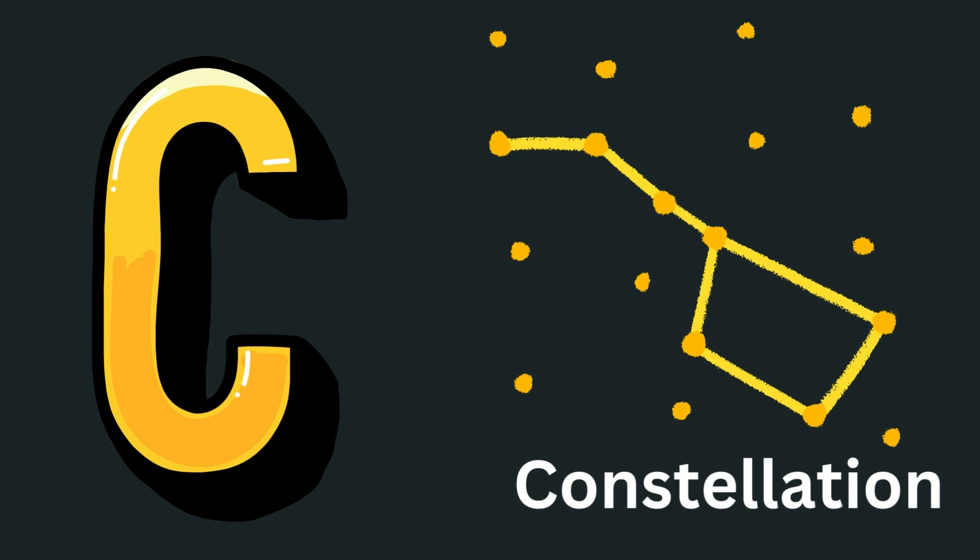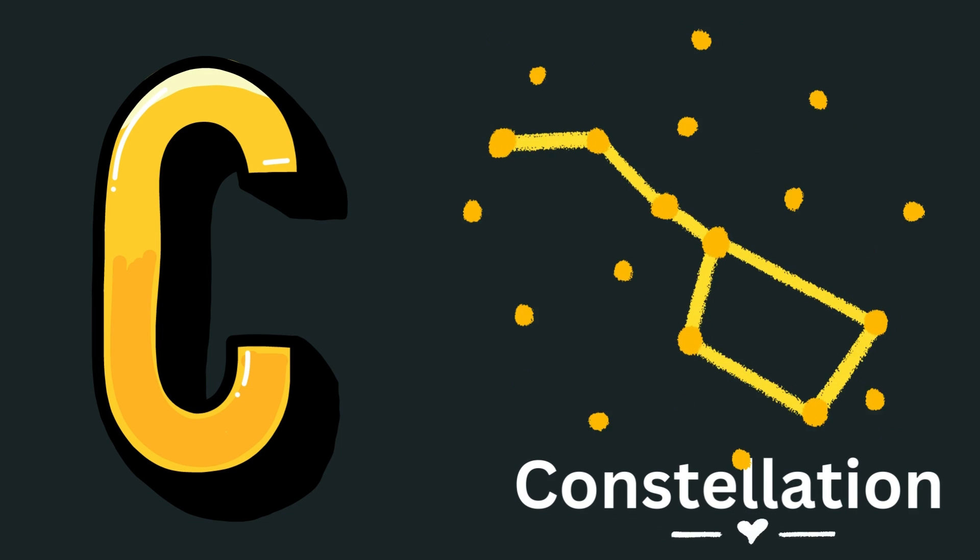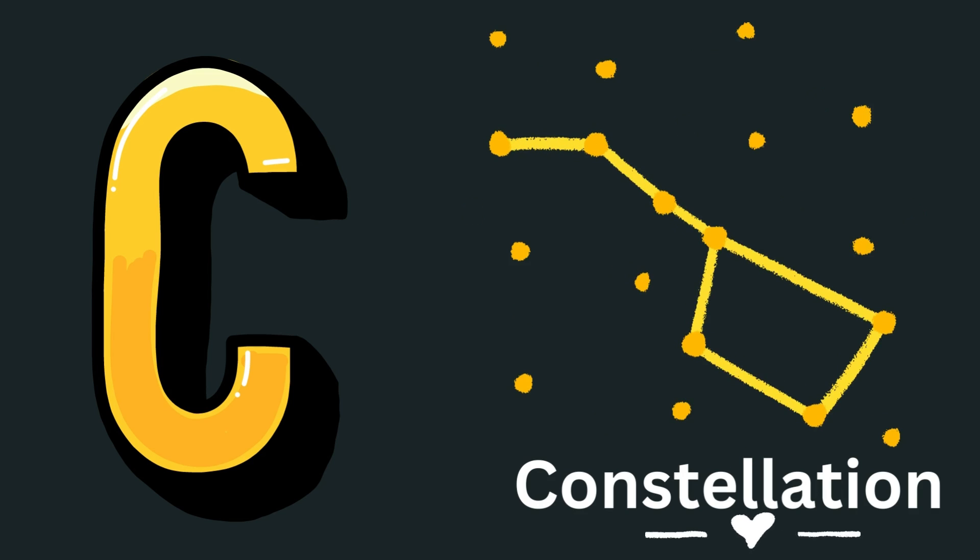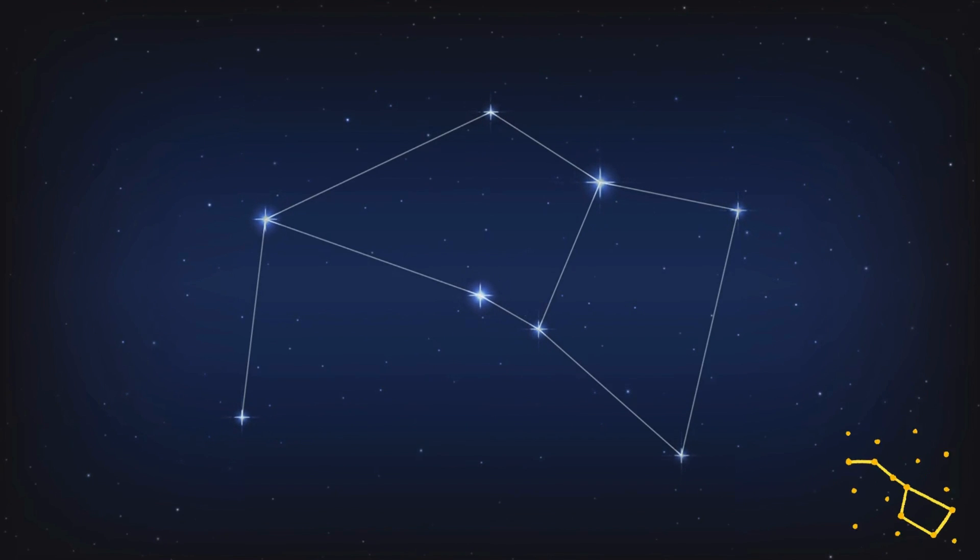C for Constellation. Constellations are groups of stars that form patterns or shapes in the night sky. Look up at the night sky so bright, constellations twinkle with starry delight.